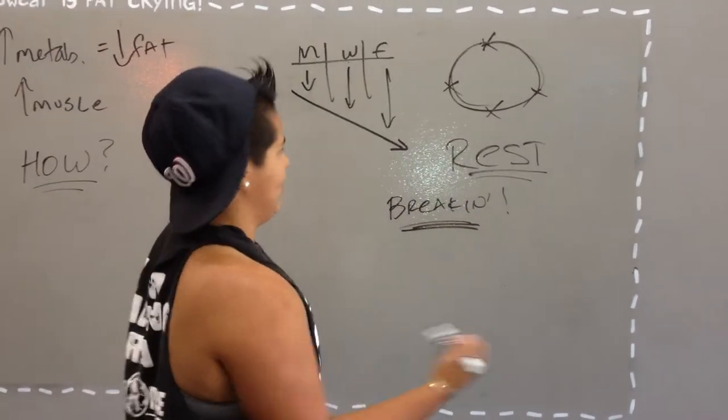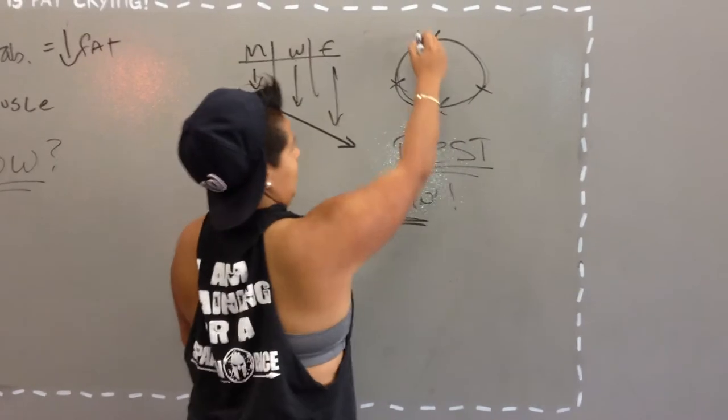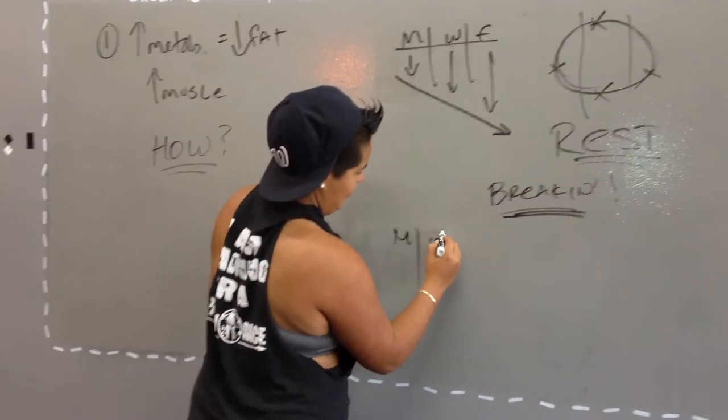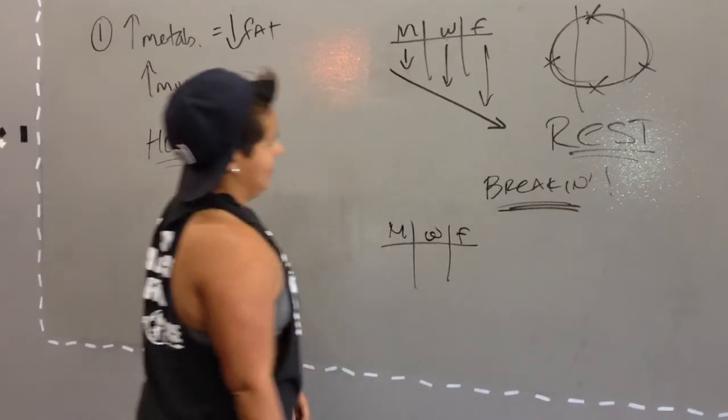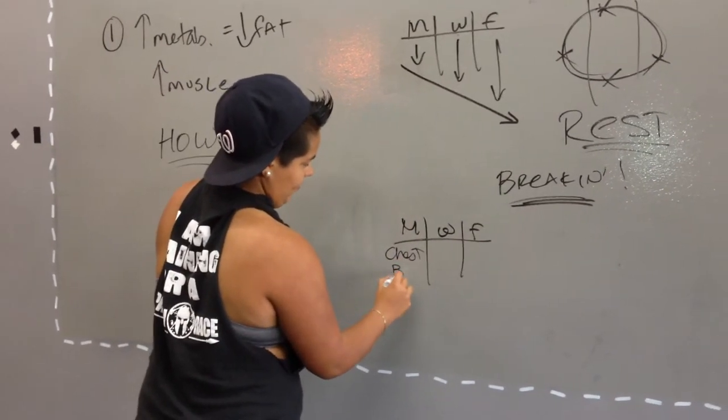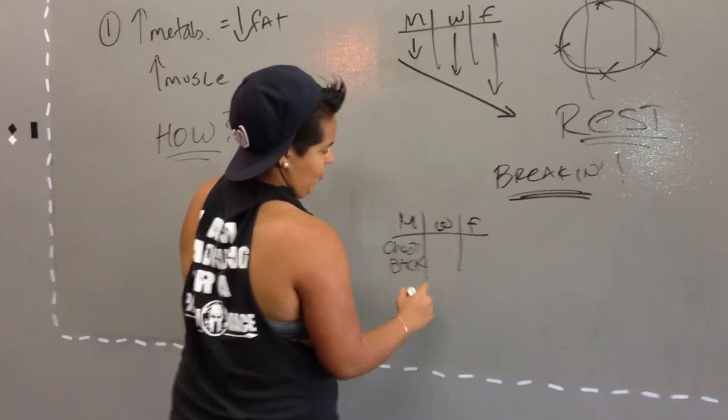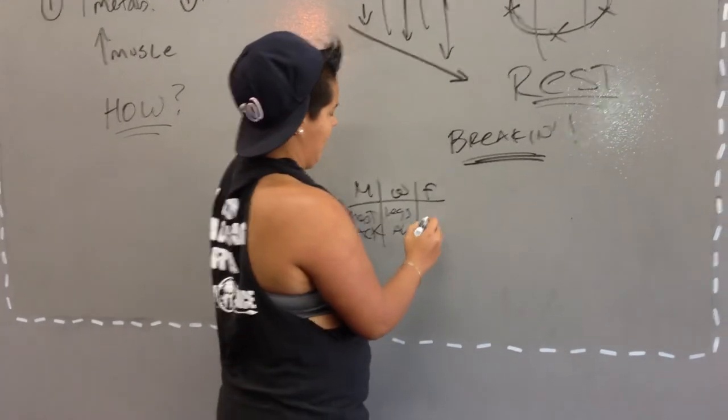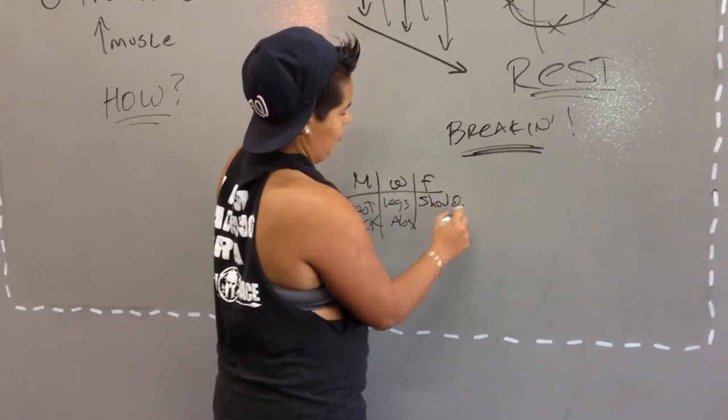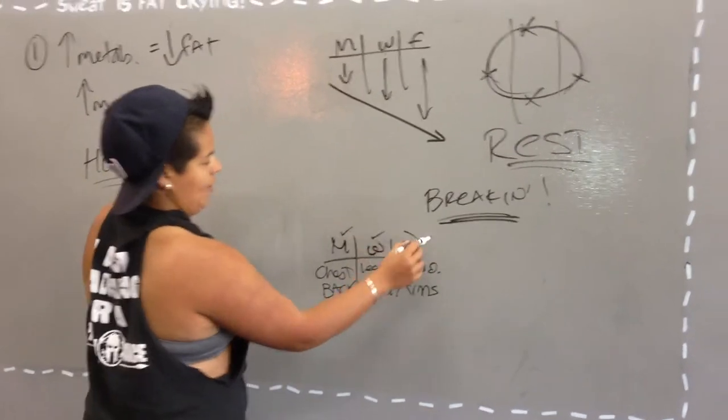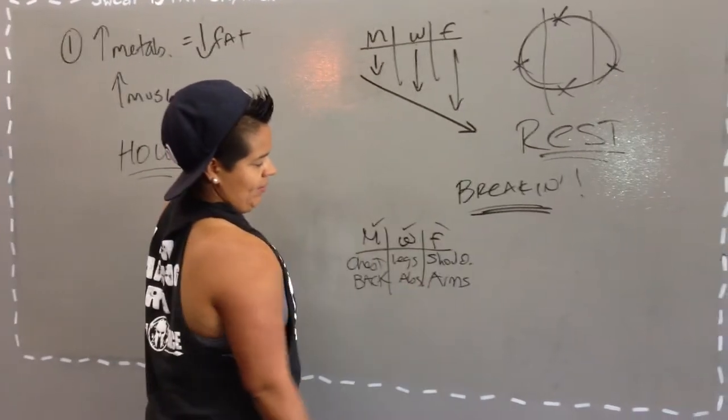So how do we fix it? Instead of doing full body a few times a week, we're going to split them up now. Monday, Wednesday, Friday, that's still cool, but instead of doing your full body, you're going to only do your chest and your back. Then on Wednesday, we're going to do legs, abs. Friday, we'll do shoulders and arms. So boom, you've got three times a week. You've got your full body going. Check this out.